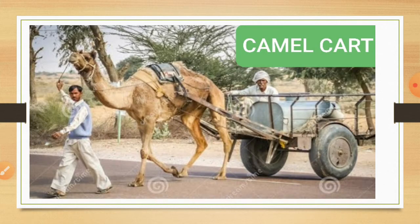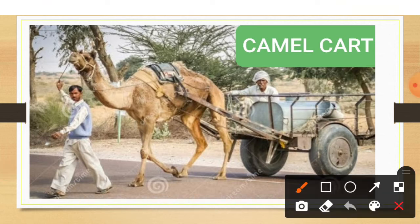Next is about Camel Cart. Camel Cart is used in desert areas. For example, in Rajasthan. In the desert, there is a lot of sand around. In that area, people travel with the help of Camel Cart. The camel pulls this cart. In some areas, Bullock Cart is also used. Rajasthan is a desert area where Camel Cart is used.